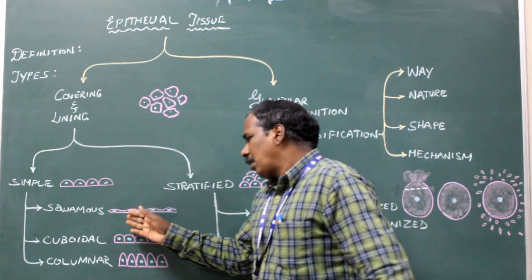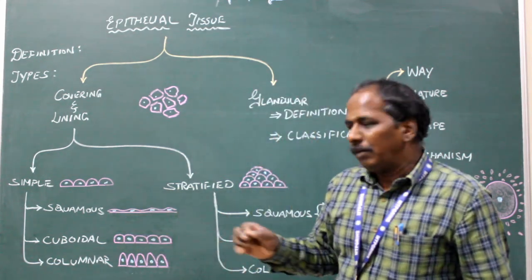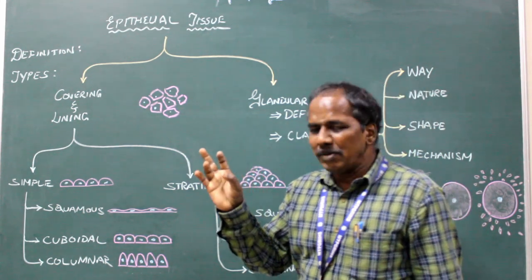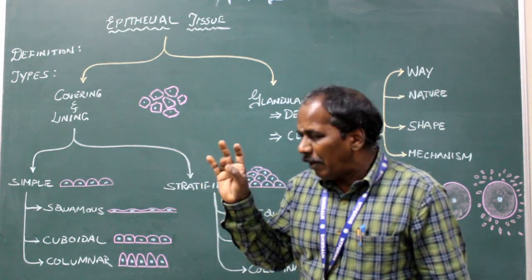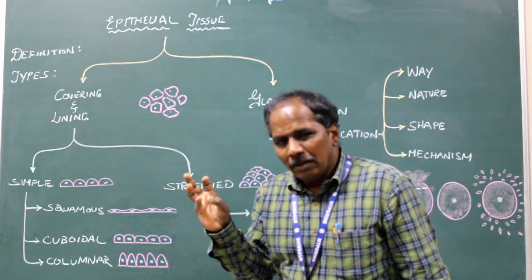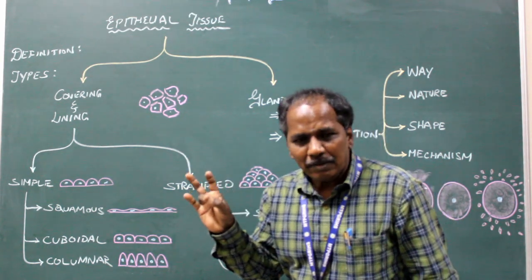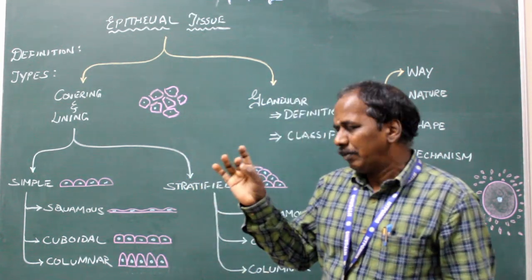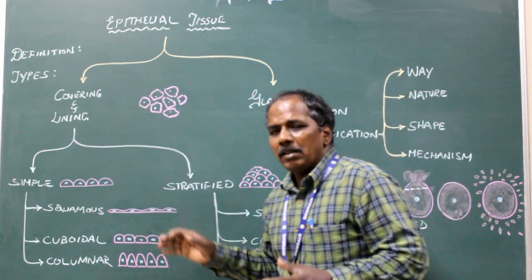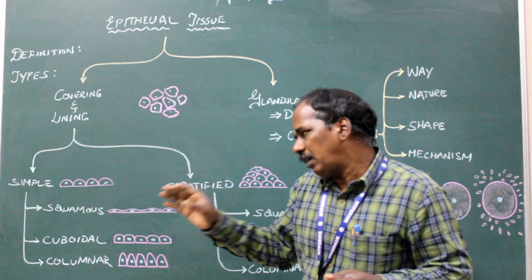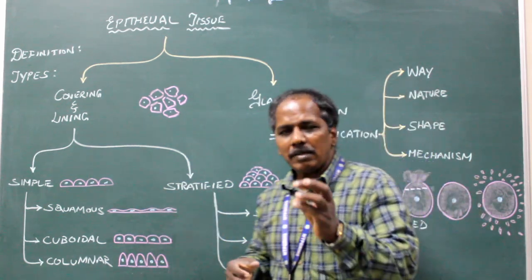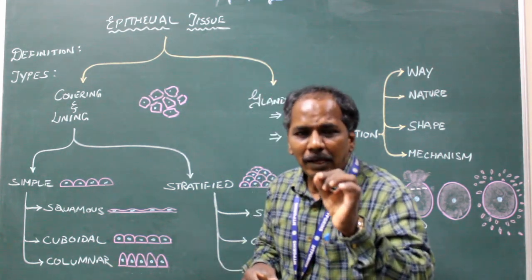Simple squamous epithelium is present in the alveoli of lungs. It is also present in the peritoneum, pericardium, and pleura. Pleura is the outer covering of the lungs, pericardium is the outer covering of the heart, and peritoneum is the outer covering of the organs in the abdomen. The squamous cells present here are known as mesothelium. It also lines the blood vessels, where it is known as endothelium.